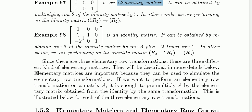Now consider the matrix 1 0 0 / 0 1 0 / -2 0 1. This one is a bit different, but it can also be obtained from the identity matrix. It is obtained by replacing row 3 of the identity with row 3 plus (-2) times row 1. So we multiply the first row by -2 and add it to the third row. This matrix is also an elementary matrix.